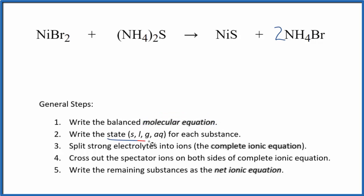Now we need to write the state for each substance. Compounds with bromine are often insoluble, usually insoluble. Ammonium compounds, if you know your solubility rules, we have an ammonium compound that's going to be soluble. Sulfides, though, in general, they are insoluble.